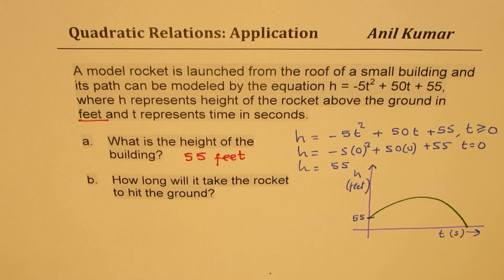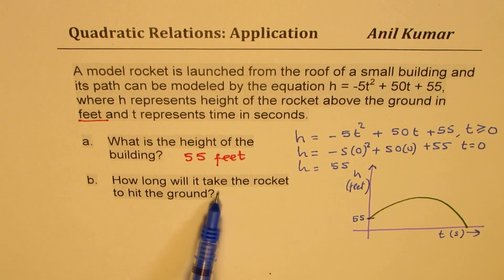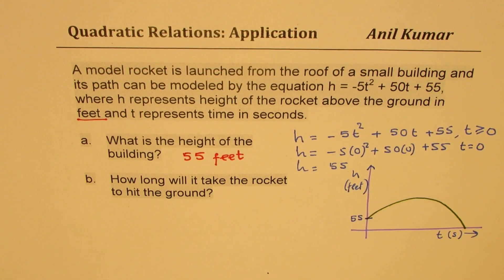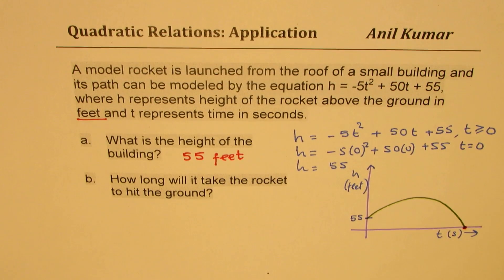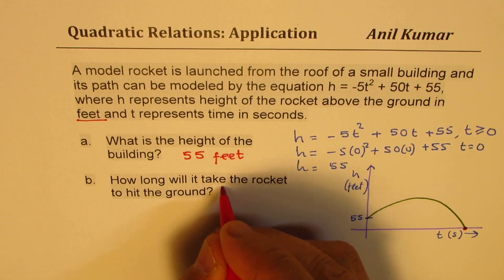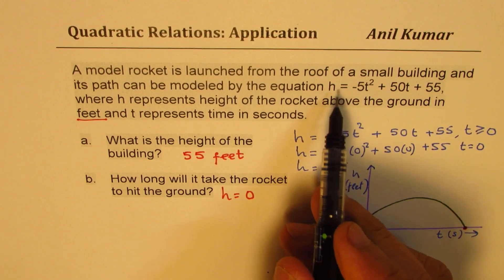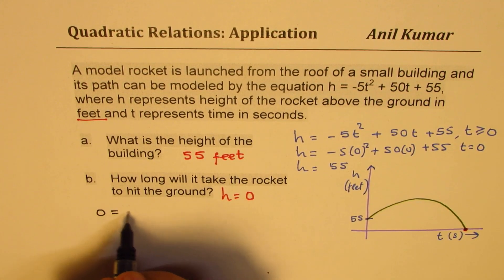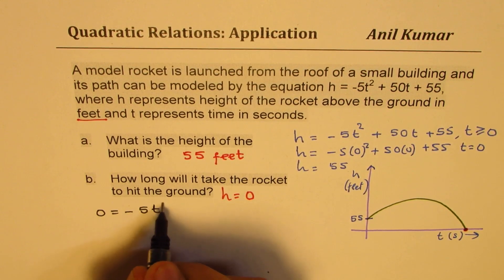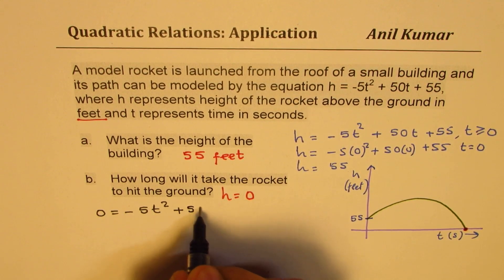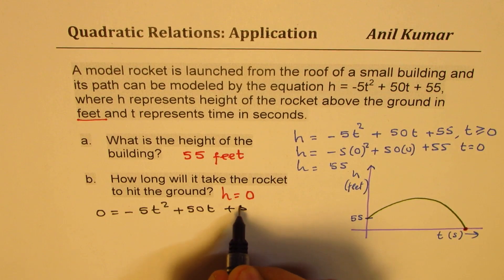Part B is, how long will it take the rocket to hit the ground? Straightforward. Basically, we want the time when height is 0, so that means height should equal to 0. To find this answer, we substitute 0 for H and we get minus 5T squared plus 50T plus 55.